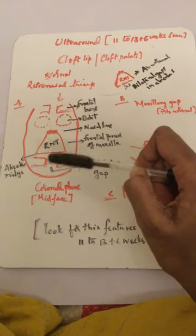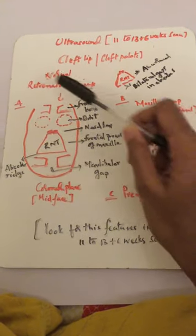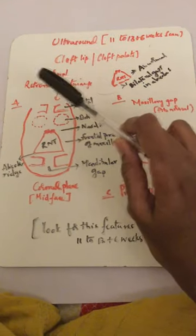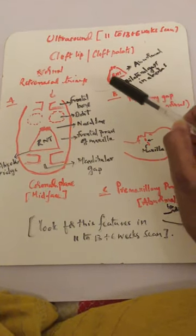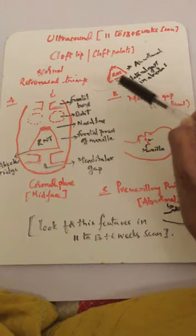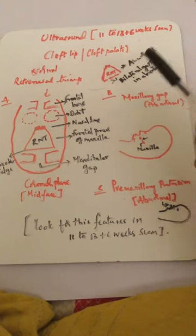This is a coronal plane midface. If these features are present, this is normal. When do you tell it's abnormal? When there are gaps between the alveolar ridge, then you identify it as abnormal and you have to rule out cleft lip or cleft palate.